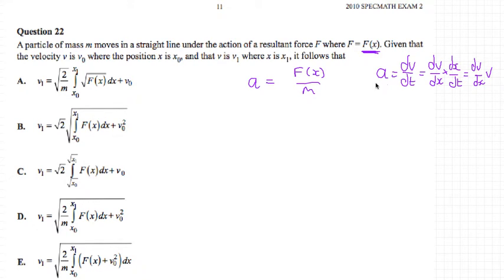So we can rewrite this as dv/dx times v. We can write acceleration as dv/dx times v. In fact, I'm going to write it like this instead: v times dv/dx. So that is equal to F(x) divided by m.